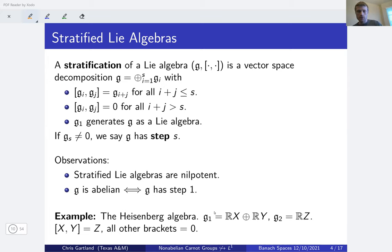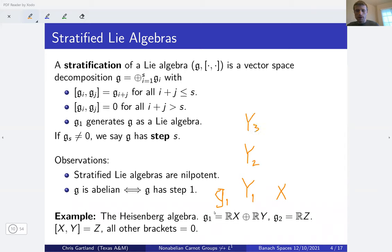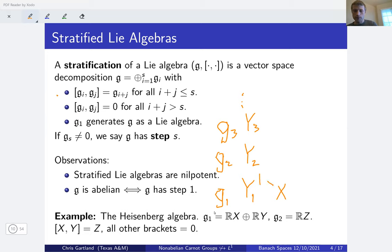Another simple example is the filiform algebras. These have, say, Y₁ and X in the first layer g₁, and then everything after is one-dimensional: Y₂ in the second layer, Y₃ in the third layer, and so on up to n. The bracket relations are [X, Y₁] = Y₂, [X, Y₂] = Y₃, and in general [X, Yᵢ] = Yᵢ₊₁; all other brackets between these generators are zero. This grading defines a stratification of this Lie algebra.